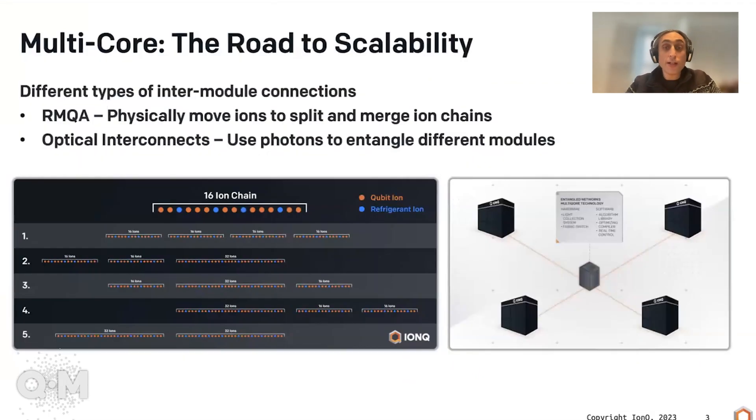How do you scale up with ions, or how do you start going multi-core with ions? There are two general methods. The first method is what we call the reconfigurable modular quantum architecture, which basically means we take these chains of ions and we move them around. We take two chains, we can merge them together, and then we can split them. So we keep the chains relatively small so we can have good control, but allow the chains to interact.